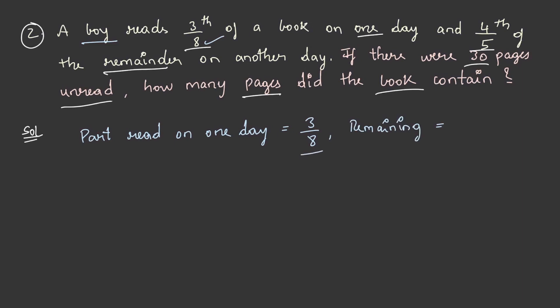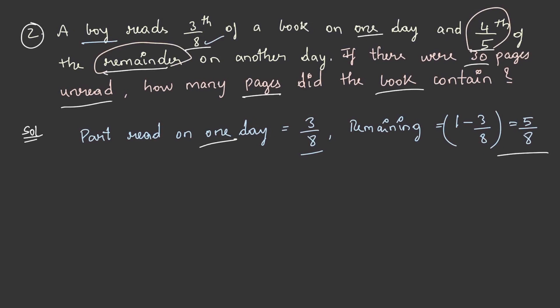Now, how to find the remaining part after one day? By subtracting the part read from the whole, which is equal to 5 by 8. So after one day, the part of the book remaining is 5 by 8, and on the second day he has read 4 by 5 of the remaining book. So on the second day, 4 by 5 of 5 by 8 is equal to 1 by 2.